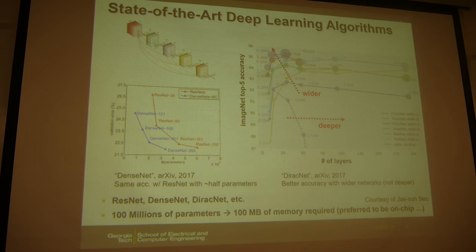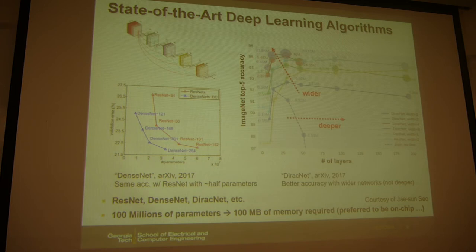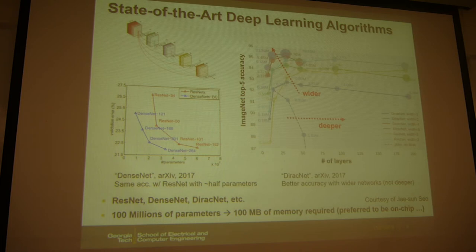If you scale SRAM technology to 3, 2, or 1 nanometer, maybe you can reach that — but that will be a few years later, and by then the neural network model may be even larger. It's like catching a running train. So people think about how to use emerging memories, which potentially have higher density than SRAM — this is active research today. For now, if you cannot store all of the weights on-chip, you still have to use DRAM, which is exactly what you do today. GPUs are equipped with HBM — for example, NVIDIA's Tesla V100 and P100 have 16 gigabytes of high-bandwidth DRAM.